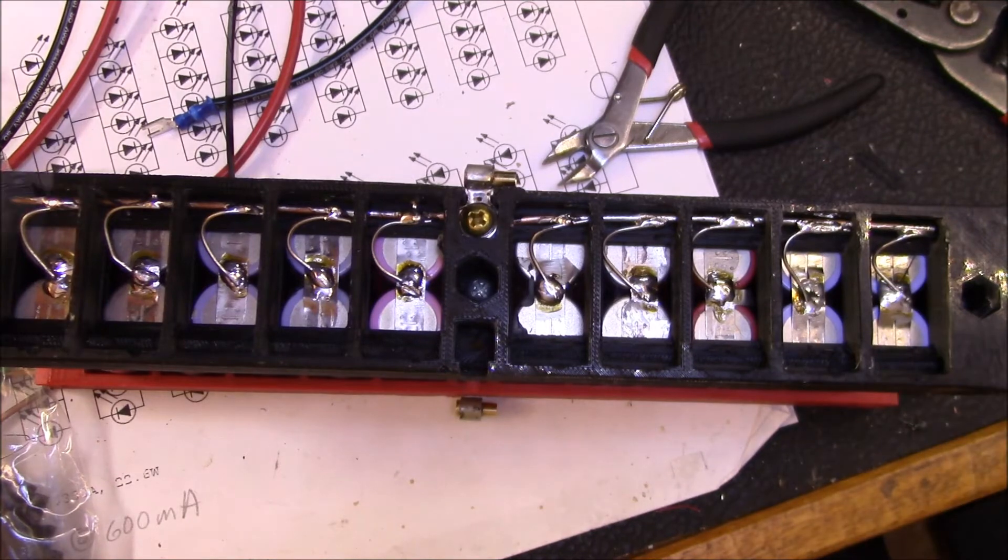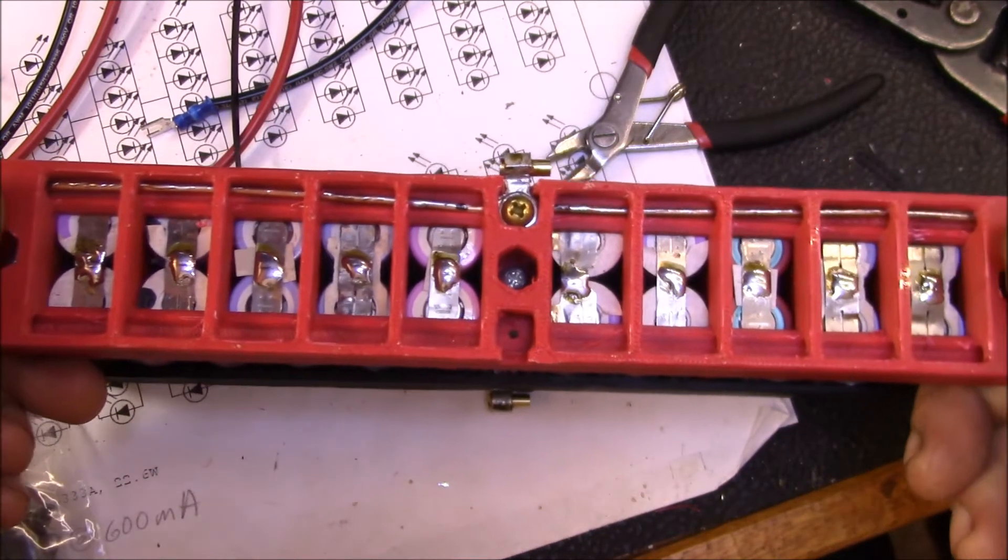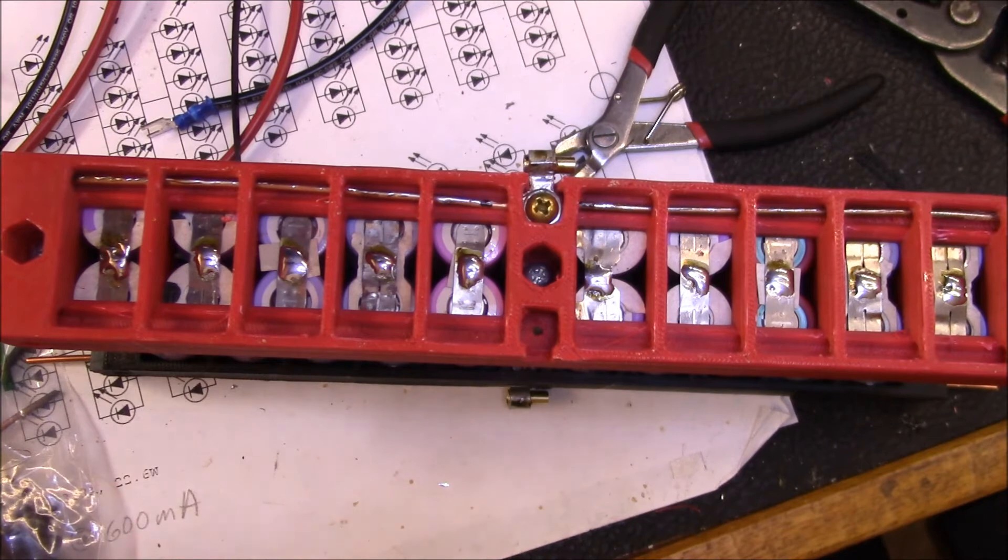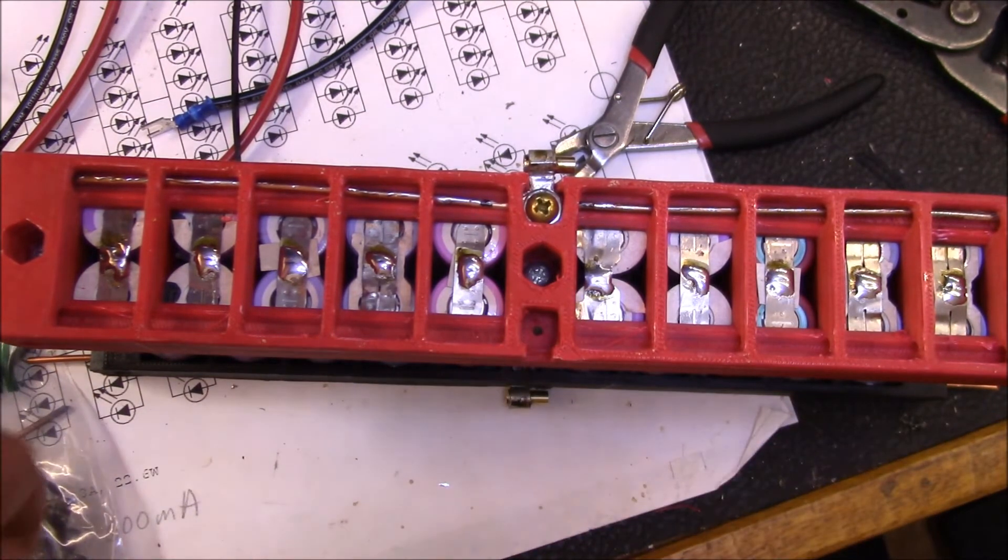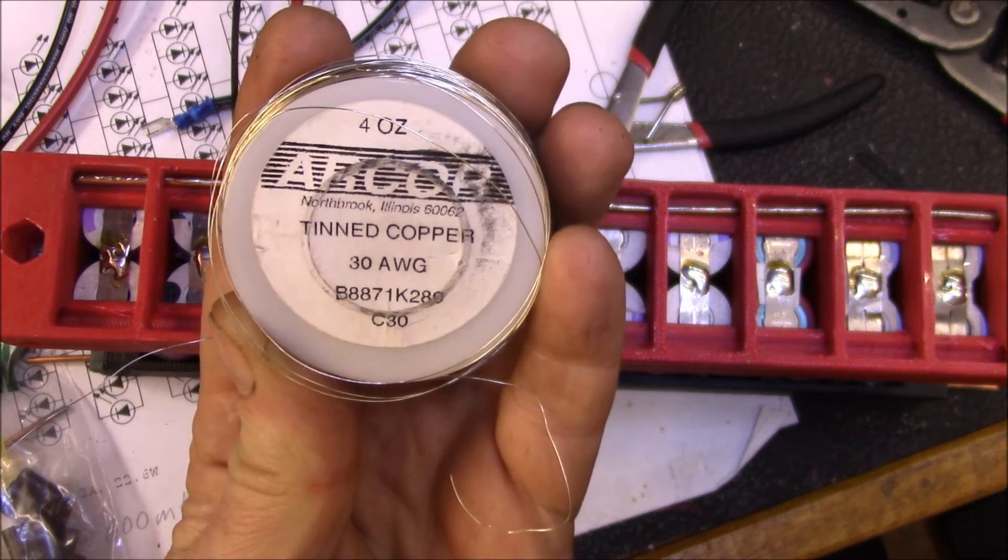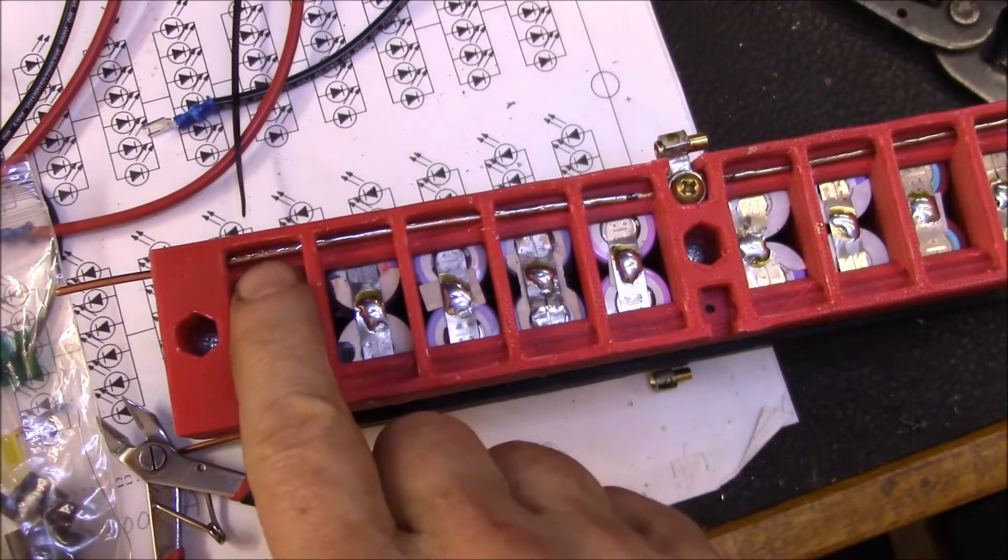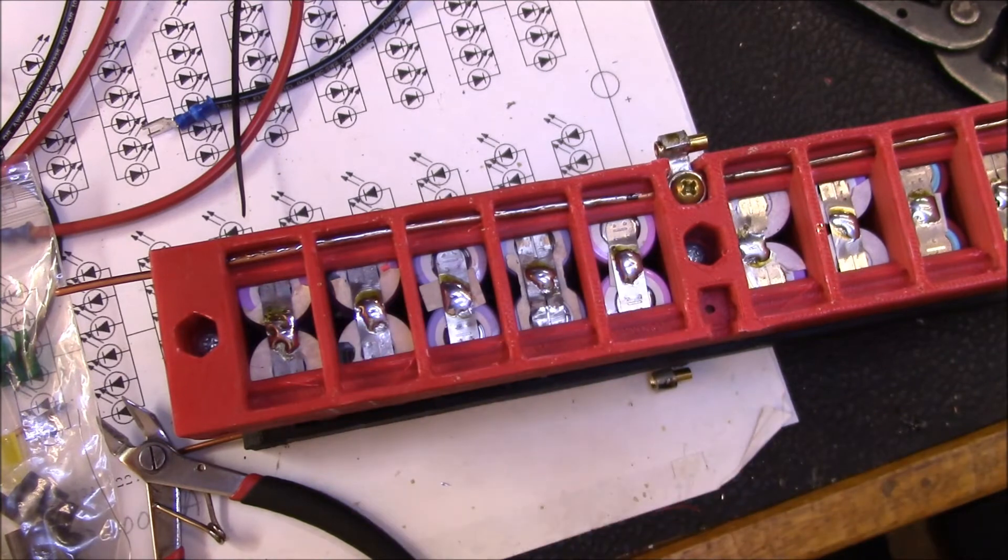For the positive wires, that's where I use my little fine gauge fuse wire here. This is 30 gauge tinned copper. But the first thing I need to do is come in here—I hit all the terminals with my flux pen because I want to come in and freshen up the solder on the bus wire here.